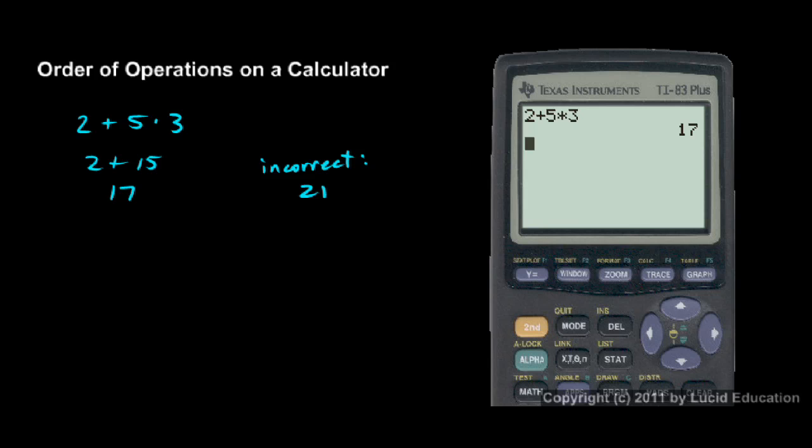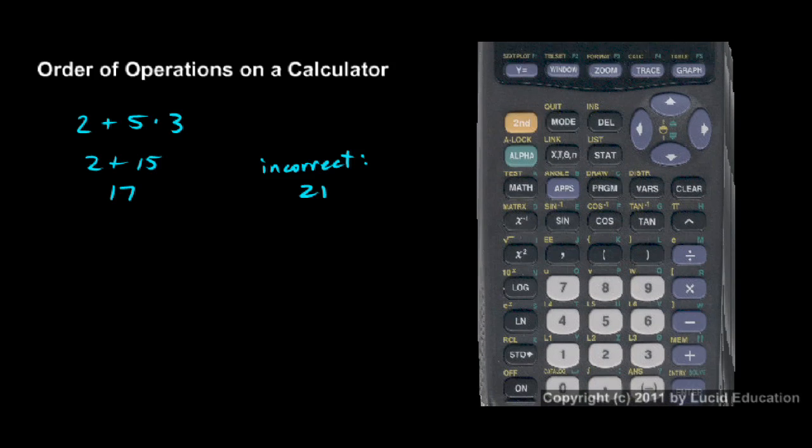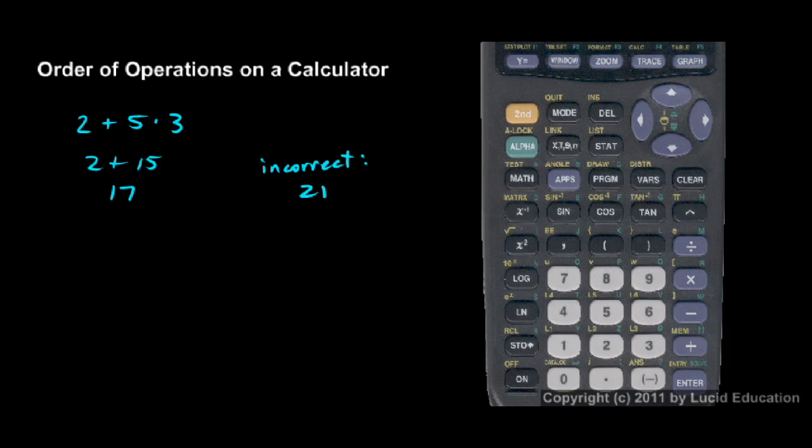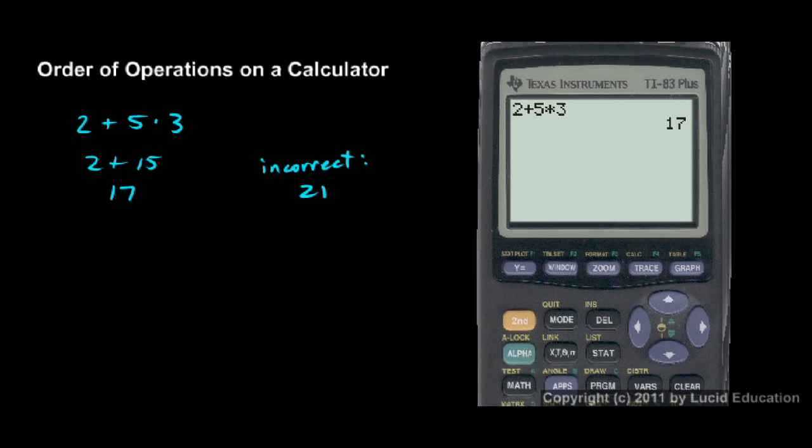If your calculator isn't, if it's saying 21, then you need to use parentheses to tell it which one to do first. Most calculators have parentheses on them. Let me show you a little bit more. Here are the parentheses keys down here: left parentheses and right parentheses. You can use those to keep things from being ambiguous.